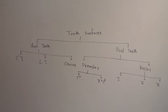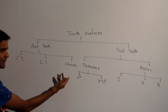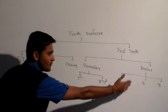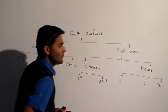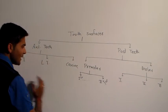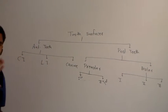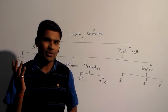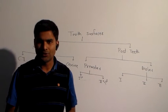On each quadrant, we have central incisor, lateral incisor, canine, first premolar, second premolar, first molar, second molar, and third molar. These are the eight teeth present in each quadrant, and we have four quadrants — eight teeth in each.